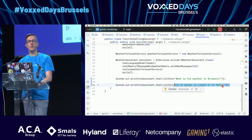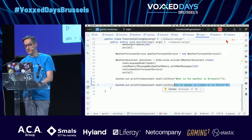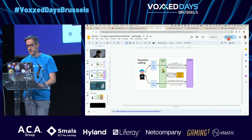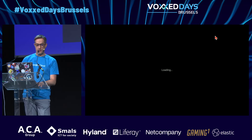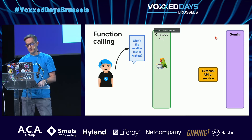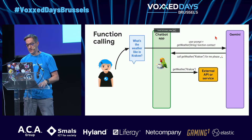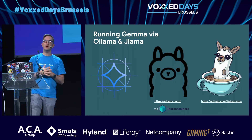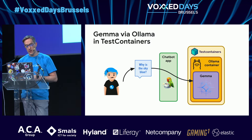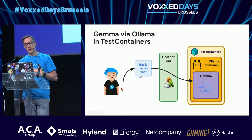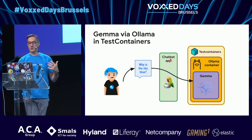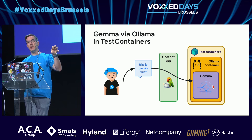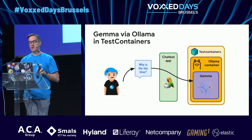Then it replies with which city is warmer. The last example I want to show before finishing — I'm the sole thing preventing you from eating now — is Gemma. I want to show you how to run Gemma locally. I'll create a chatbot application using LangChain4J and run the Gemma open model locally.